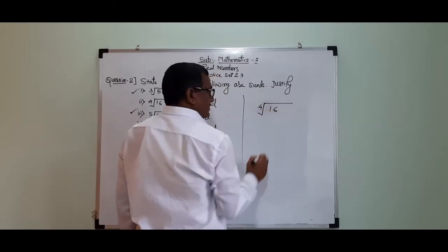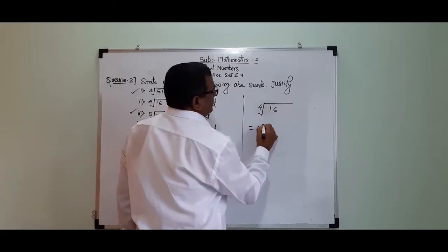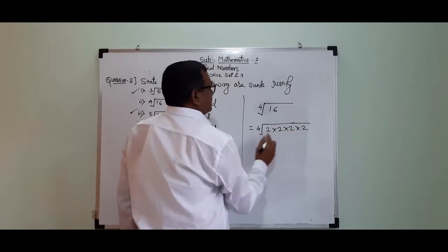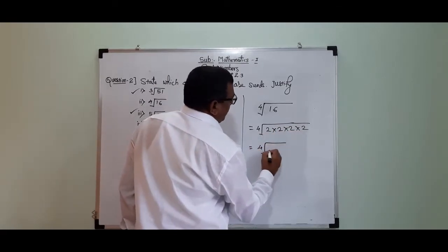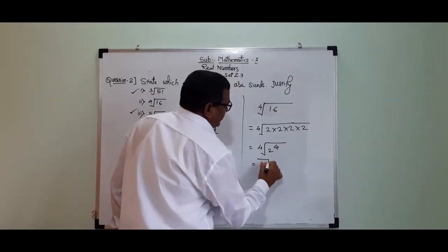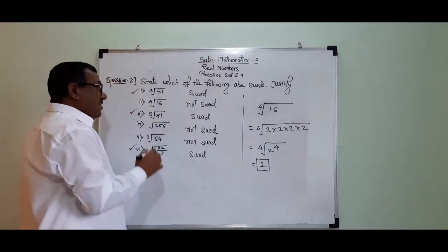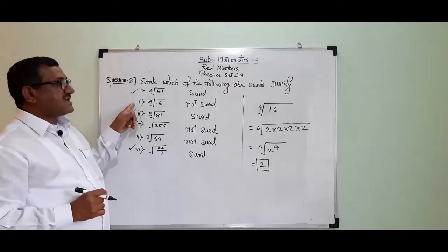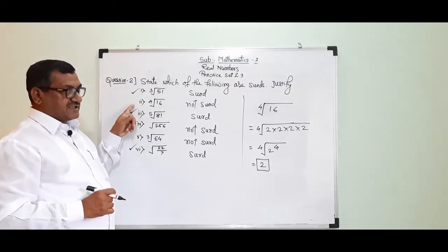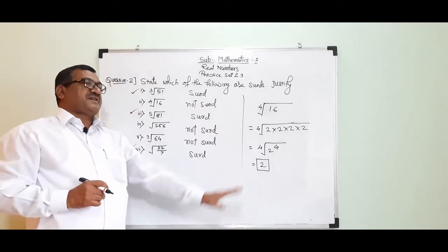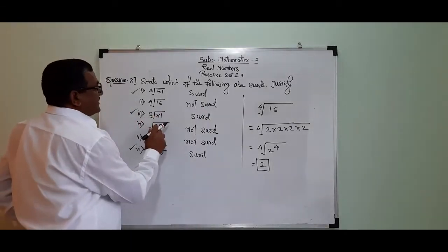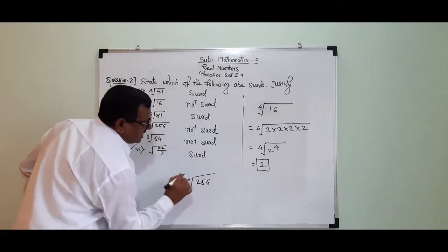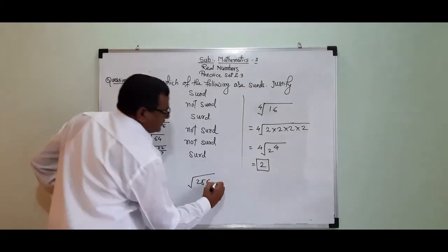That means the fourth root of 2 multiplied by 2 and multiplied by 2. This means the fourth root of 2 raised to the power 4, which equals 2. So it is not a surd; it is 2. The answer here is 2.